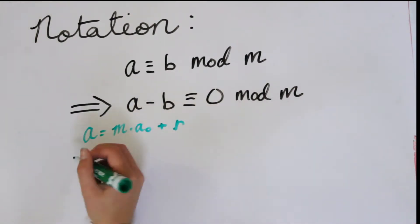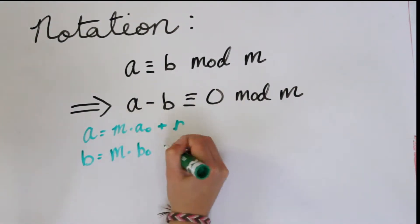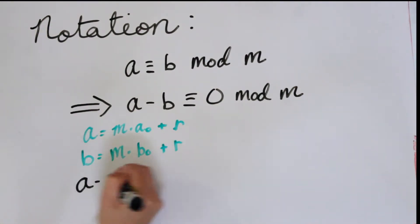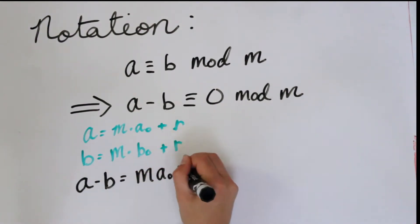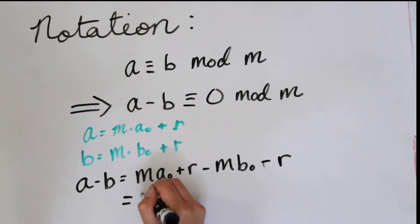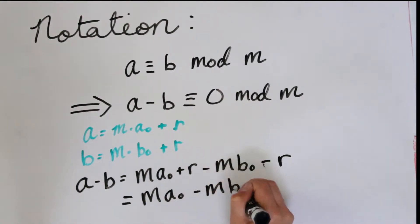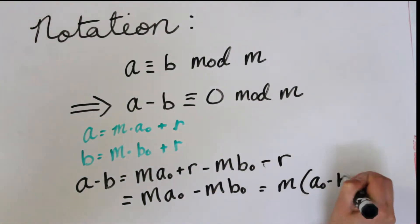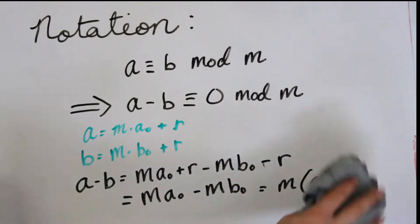The way that we can figure this out is that we say that a is going to be m times some integer a_0 plus r, and b is going to be m times another integer b_0 plus that same r. So when we take a minus b, our r's cancel out and we get something that is divisible by m.